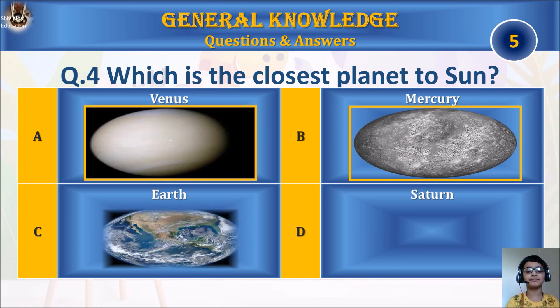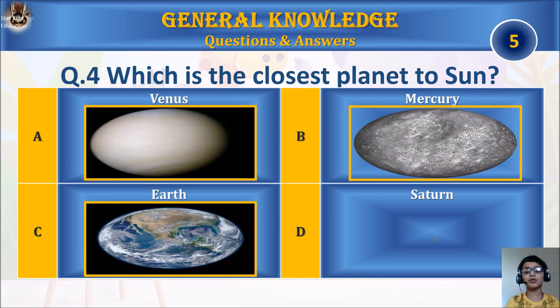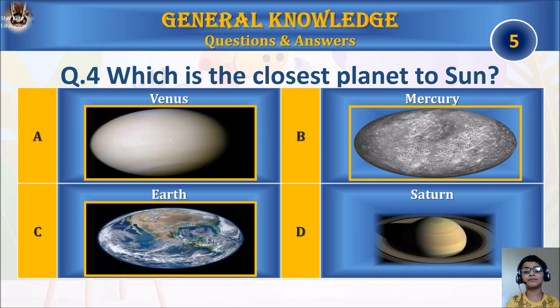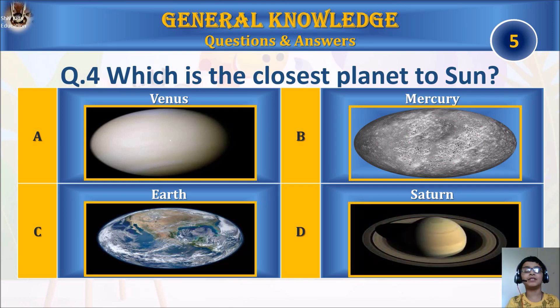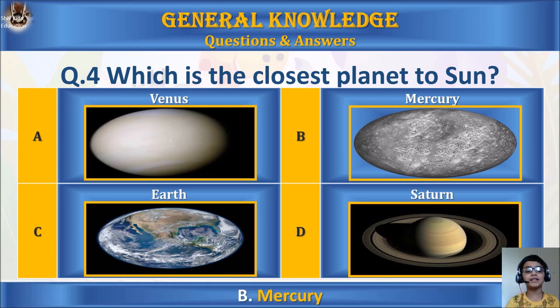Question 4: Which is the closest planet to the Sun? A. Venus, B. Mercury, C. Earth, or D. Saturn? Your time starts. The answer is B. Mercury.